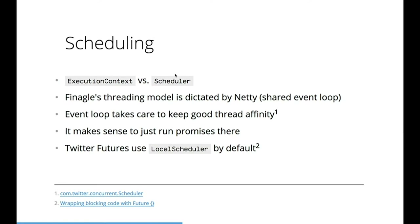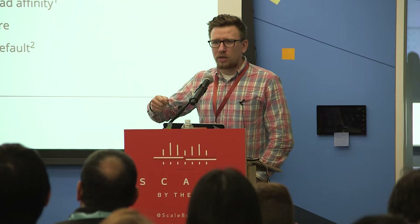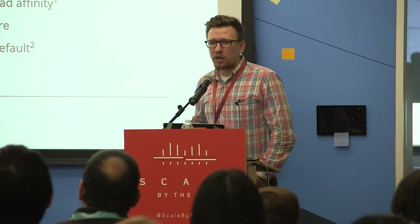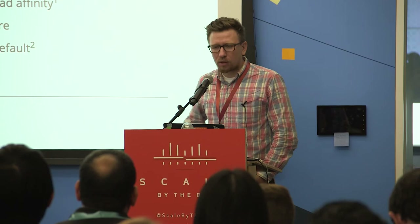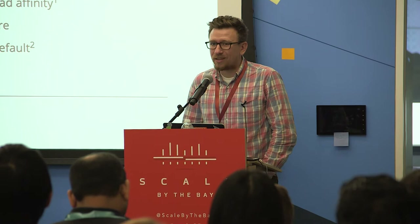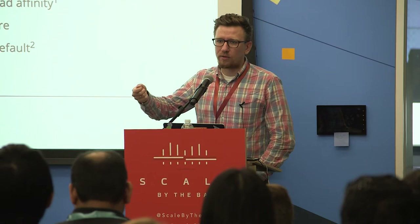The way it works: when you satisfy a promise, it goes and runs all your callbacks from the same thread used to satisfy that promise. It's kind of counterintuitive - there's no parallelism. But if you think about the history of Twitter futures and the Finagle context, there is a shared thread pool within every Finagle application which runs your promises across multiple threads, keeping good affinity between connections, requests, and threads. This technique is called local scheduling, and you can look at the scheduler in the util library - it's really simple, less than 100 lines of code.